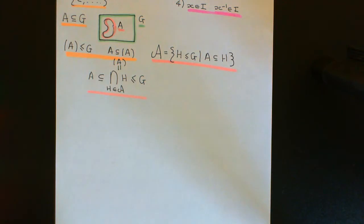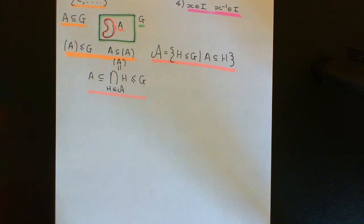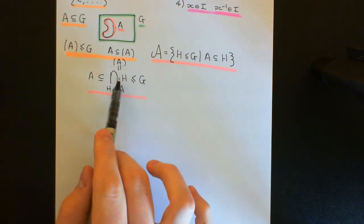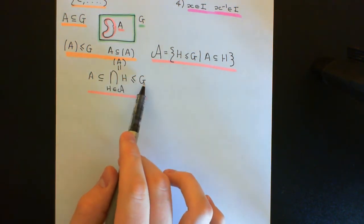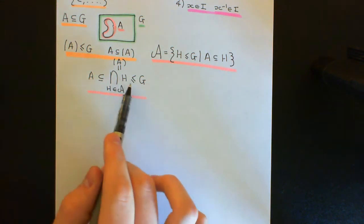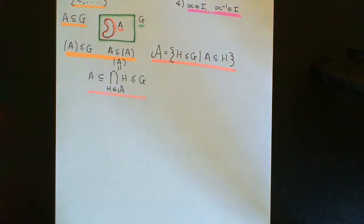Welcome back to this next video in which we are discussing subgroups generated by subsets of a group. We've now defined the subgroup generated by a certain subset of a group. If you have a subset A of a group G, then the subgroup generated by that subset is defined to be the intersection of all subgroups of G that fully contain the subset A. When we intersect all of these subgroups together, we will still get a subgroup of G.